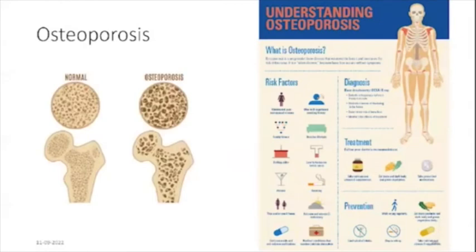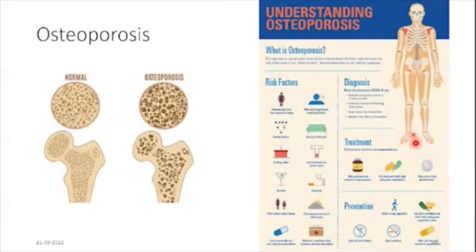Osteoporosis is a common progressive metabolic disease of the bone that decreases bone density and deterioration of bone structure. It can develop as a primary disorder or secondary due to another factor. It is most common in women after menopause but may develop in men. Risk factors that cannot be altered include advanced age, being female, estrogen deficiency after menopause, and being of European or Asian origin. Potentially modifiable risk factors include excessive alcohol intake, vitamin D deficiency, smoking, lower body mass index, malnutrition, and physical inactivity.